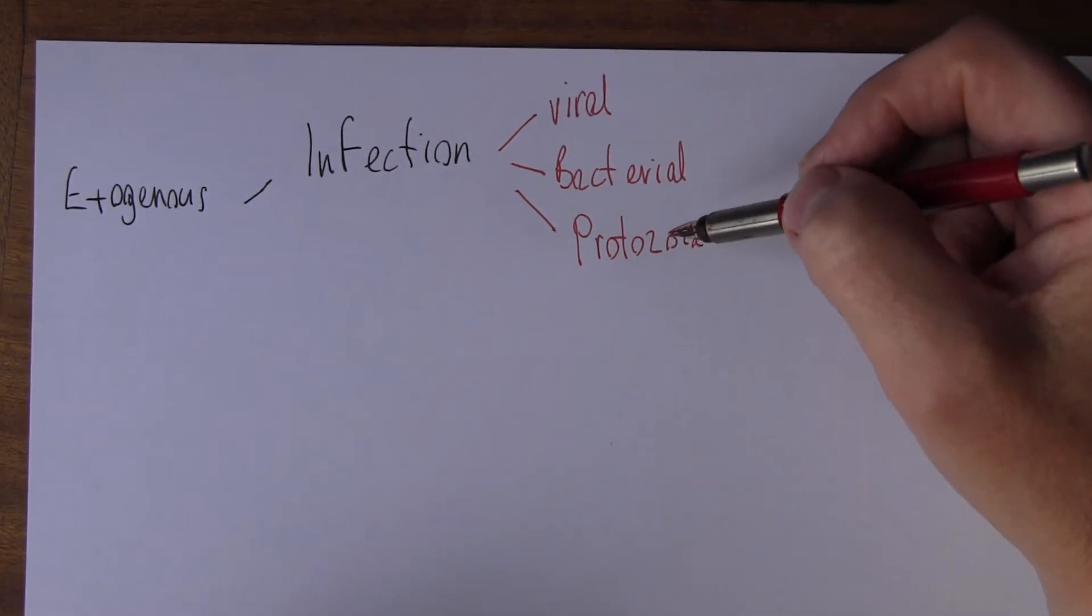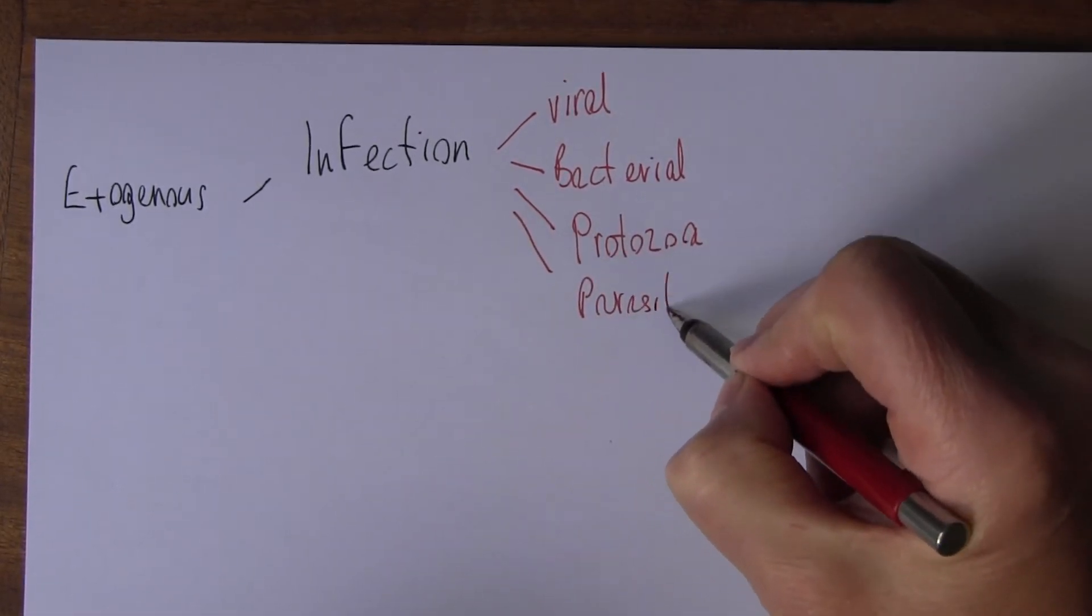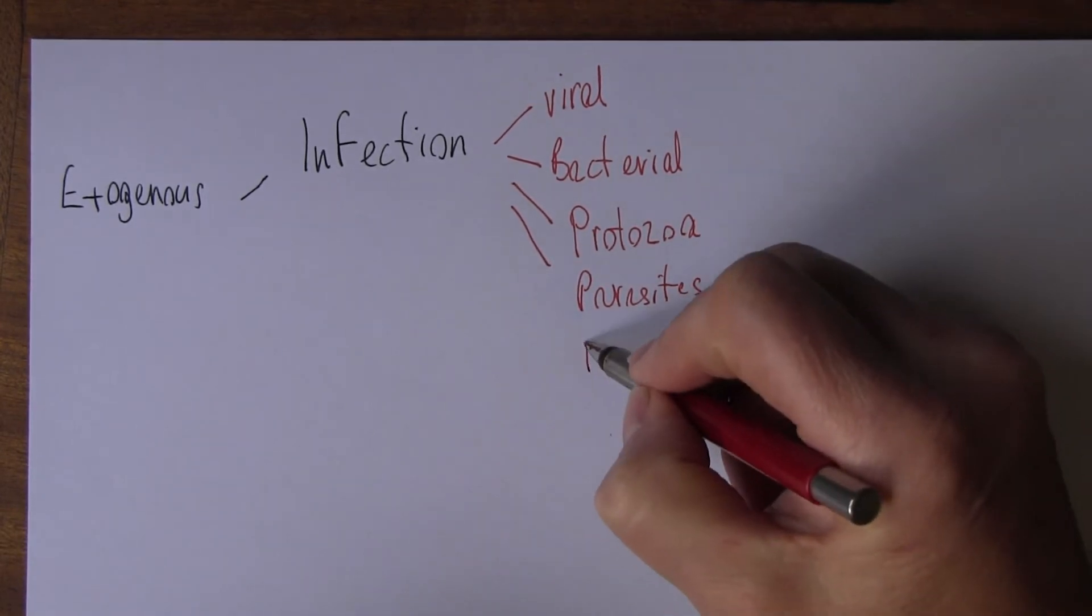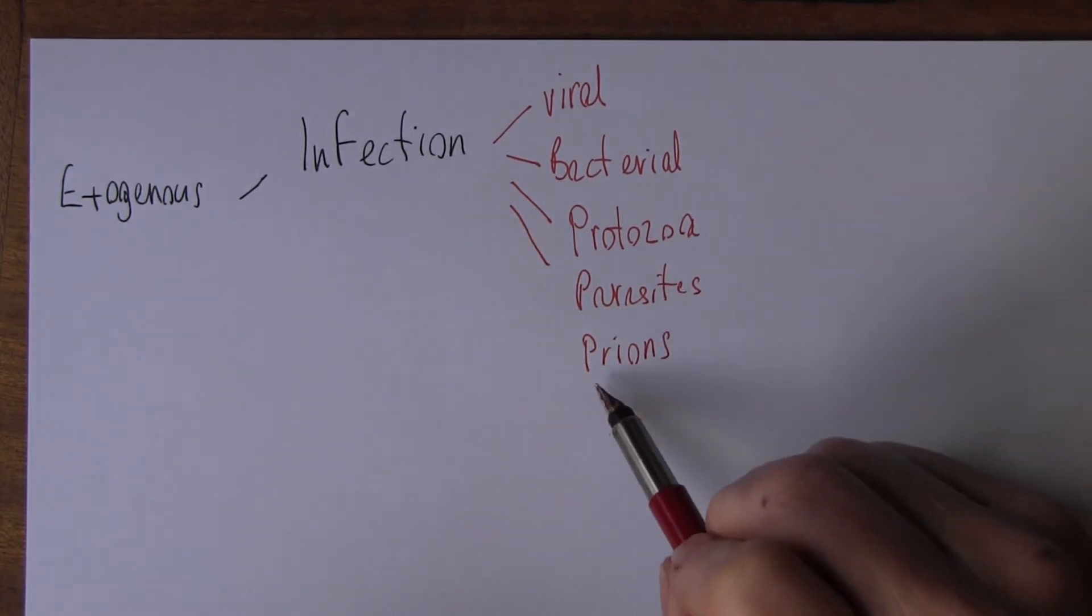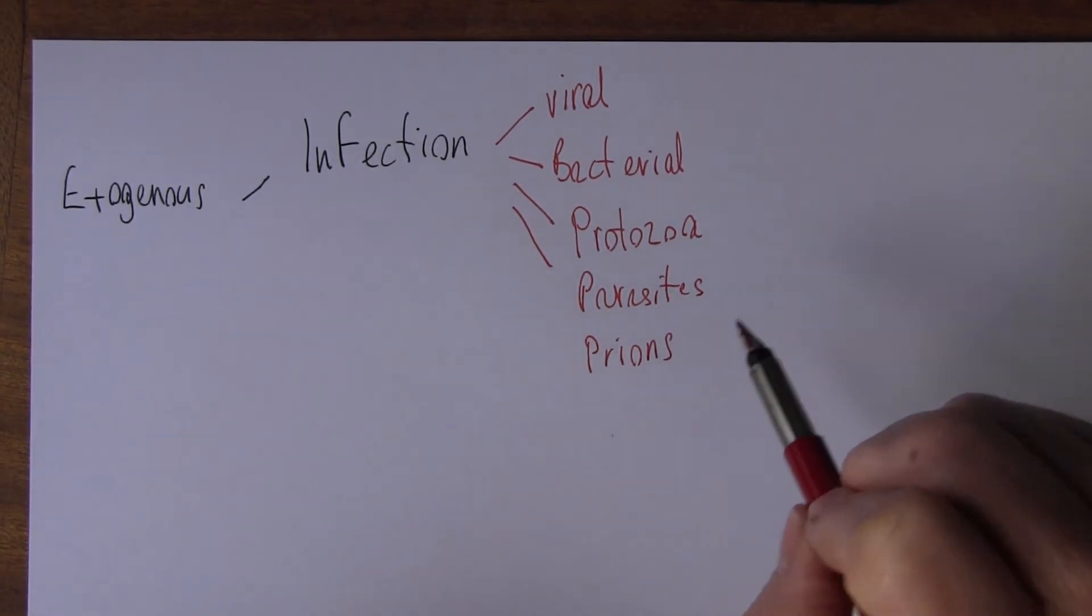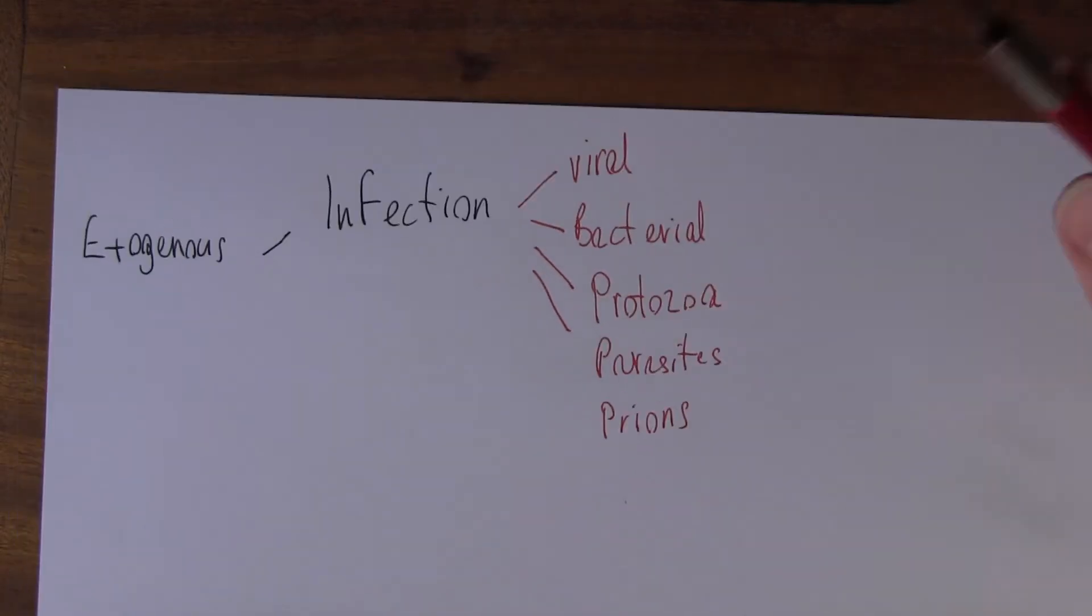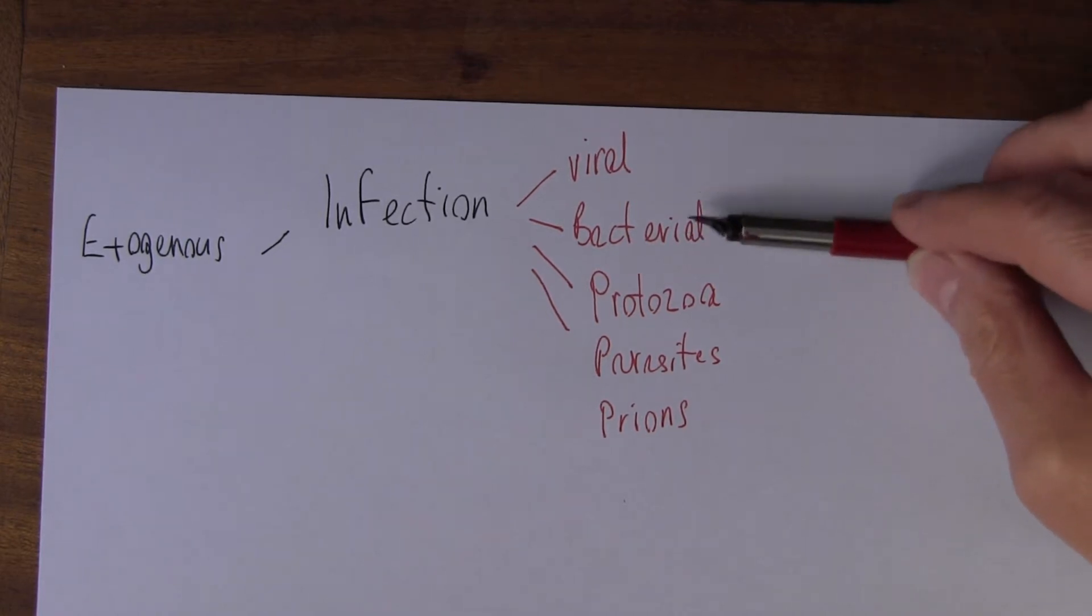So these different things can cause - parasites of course, worm infections, helmitic infections, and prions. Prions stand for protein, it's like an acronym - proteinaceous infectious particles causing things like Creutzfeldt-Jakob disease, spongiform encephalopathy. Fortunately they're fairly rare. Most of the infections we see are viral and then bacterial. These are the common causes of infection.